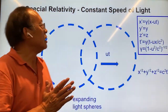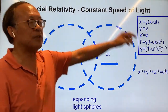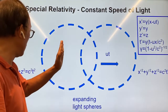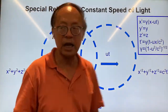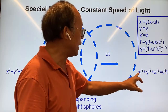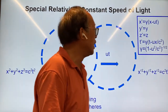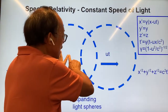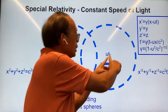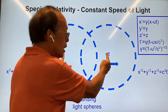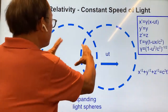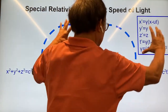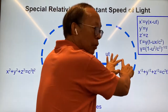According to Einstein, the laws of physics including the speed of light are the same no matter what inertial reference frame you are in. Suppose we have two inertial reference frames: one described by x, y, z, t and another by x', y', z', t'. Initially the two light spheres are the same, but the center of the second sphere moves out at velocity u, so at time t it has moved a distance ut. The moving observer will see the light expanding as a sphere also moving out at velocity u.